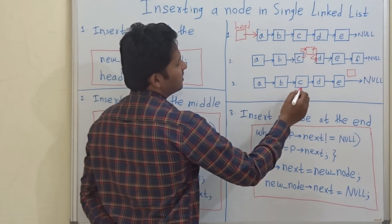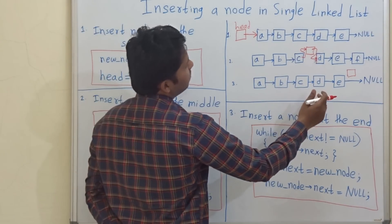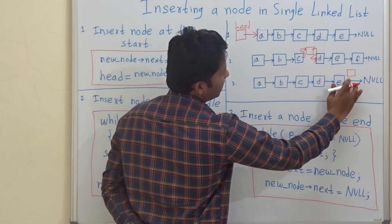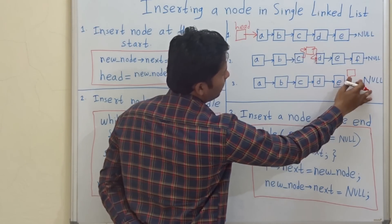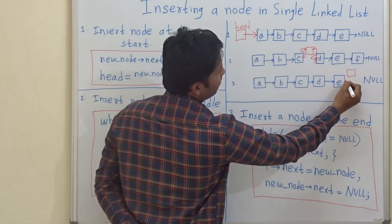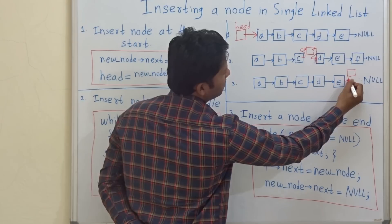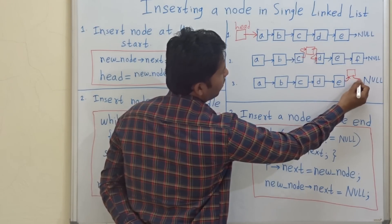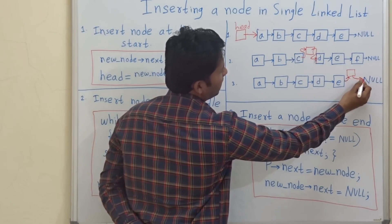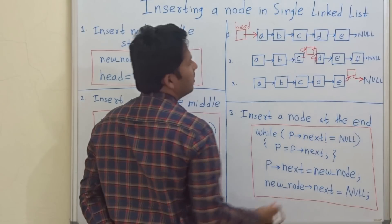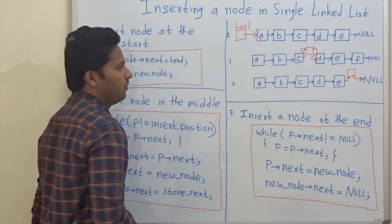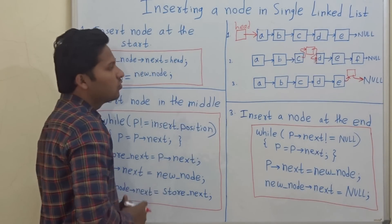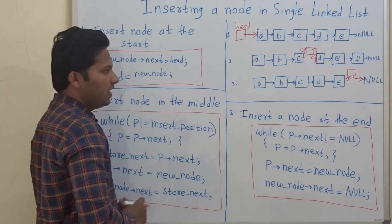Now the last case: inserting the node at the end. The last node, which points to NULL, will now point to the new node. And the new node's next pointer will point to NULL. This is how we insert the node at the end.